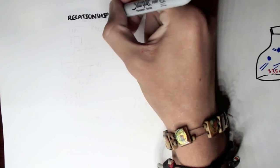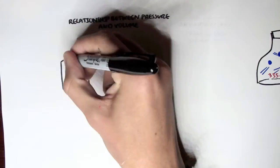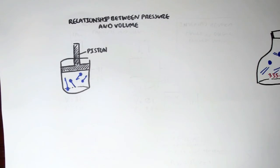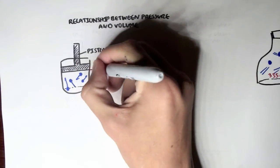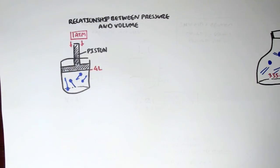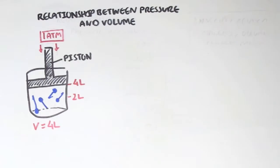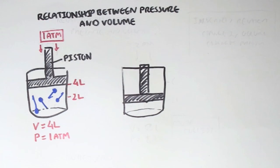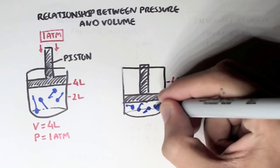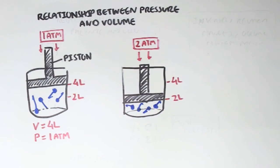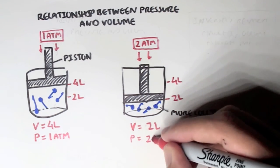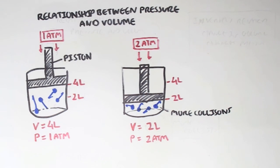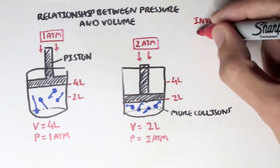Next, let's look at the relationship between pressure and volume. We have a container with a piston, and this container has some gas particles within it, which exerts some force. If we push down this piston with 1 atmospheric pressure, the piston will be held at about 4 liters — so volume is 4 liters and pressure is 1 atm. Now, what if we push down the piston to 2 liters exerting 2 atmospheric pressure? This would mean there are more collisions in the container, so the volume is 2 liters but the pressure has increased to 2 atmospheres. Pressure and volume are inversely related.